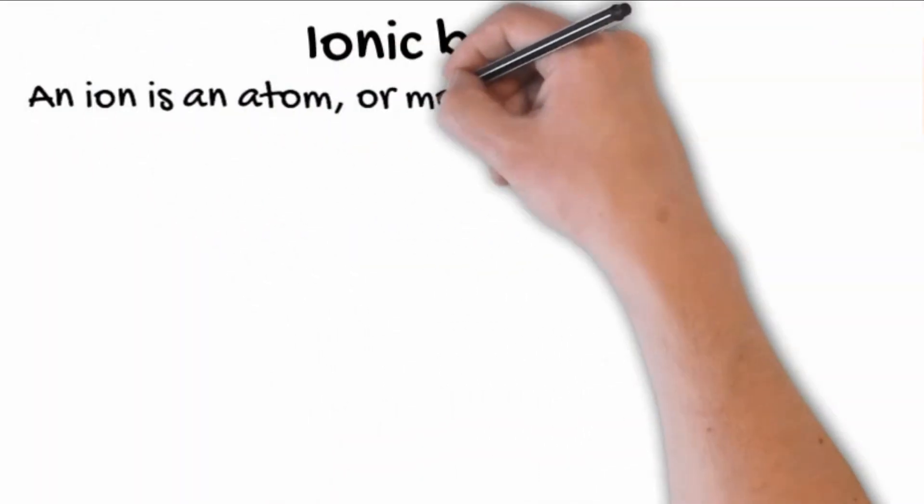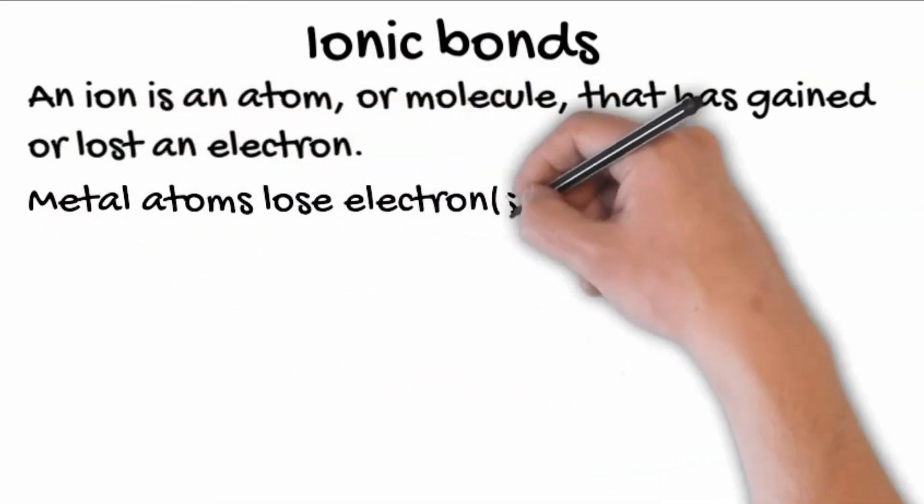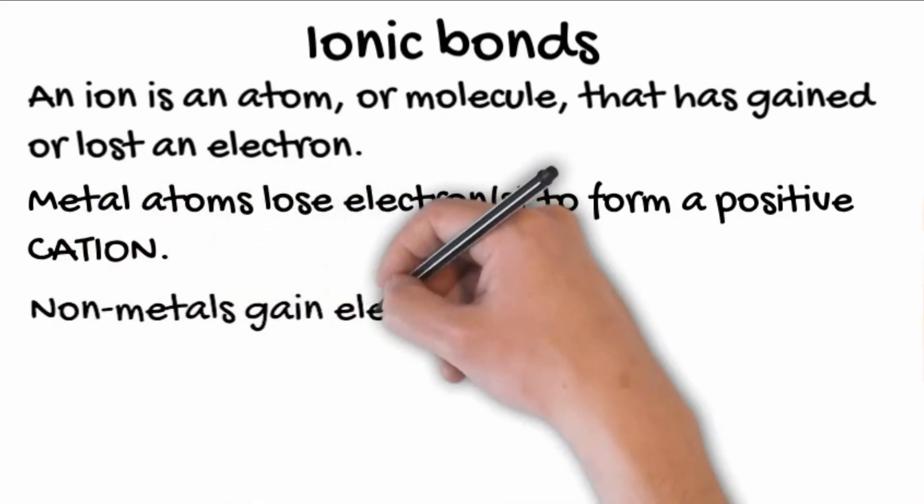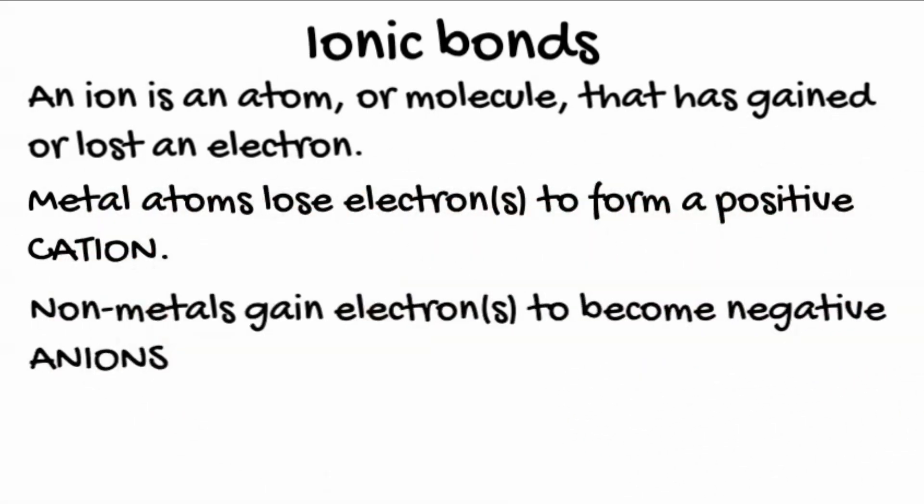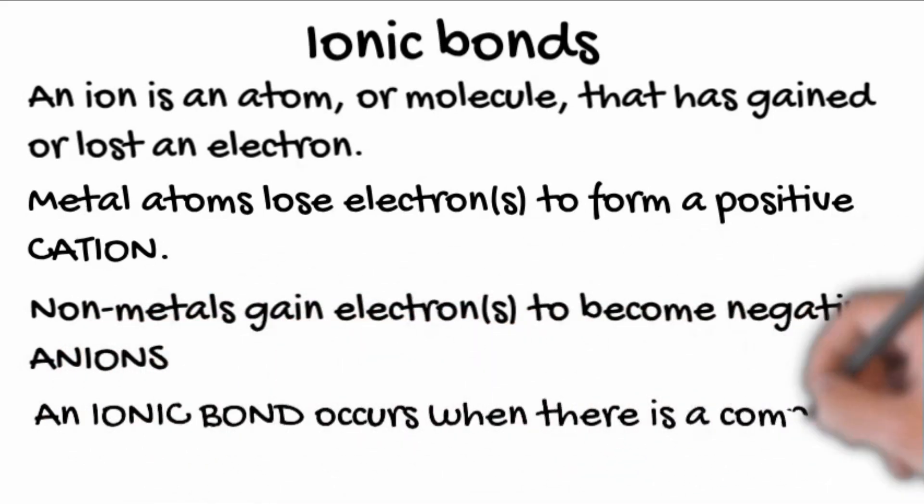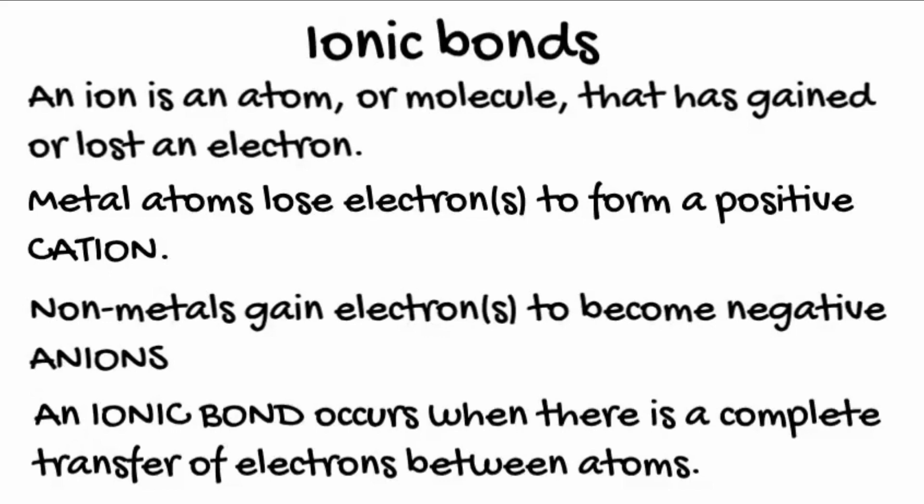An ion is an atom or molecule that has gained or lost an electron. Metal atoms lose electrons to form a positive ion or cation. Nonmetal atoms gain electrons to form negative ions or anions. An ionic bond forms when there has been a complete transfer of electrons.